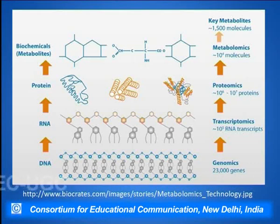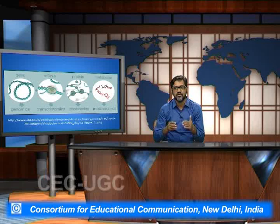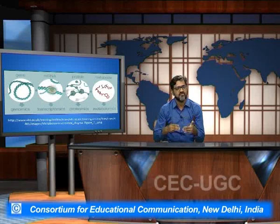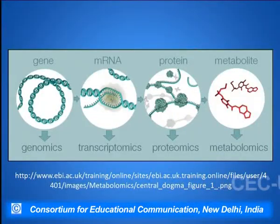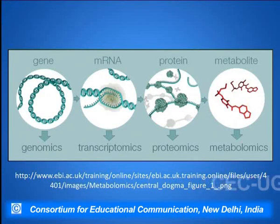This is how the structural hierarchy is going into the functioning and these various studies are going into the interplay. The study of the genes is called genomics, the study of RNA is transcriptomics, study of proteins is proteomics, while the study of metabolites functioning within the body is called metabolomics.